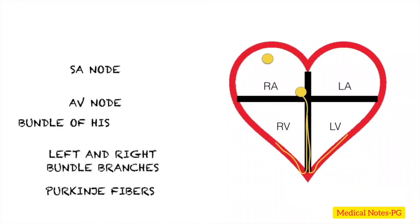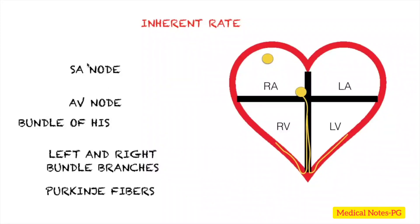Another concept to discuss is the inherent rate of cardiac cells. These are essentially the heart rates generated depending on which cardiac cell sends an impulse. For example, if the SA node initiates the impulse and it travels all the way to the Purkinje fibers, this generates a heart rate of 60 to 100 beats per minute.